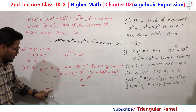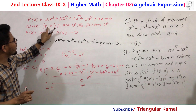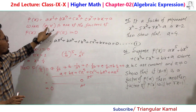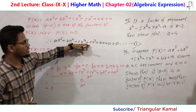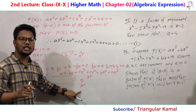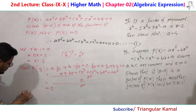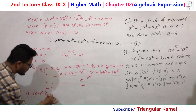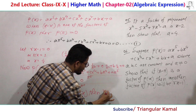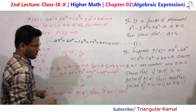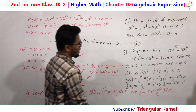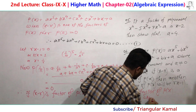So p(1/r) equals zero when x minus r is a factor of p(x). Since rx minus 1 equals zero gives x equals 1/r, and p(1/r) equals zero, we conclude that rx minus 1 is also a factor of p(x). Therefore, if x minus r is a factor of p(x), then rx minus 1 will also be a factor of p(x), which is what was required to be shown.